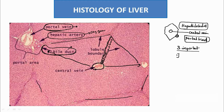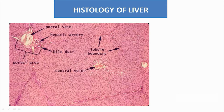The three important structures of the portal triad are: portal vein, hepatic artery, and bile duct. The central vein is not part of the portal area. The central veins unite to form the hepatic vein, and this hepatic vein drains into the inferior vena cava.